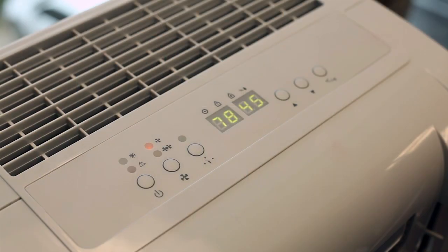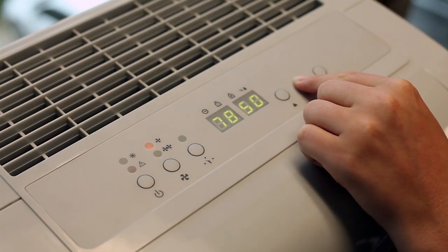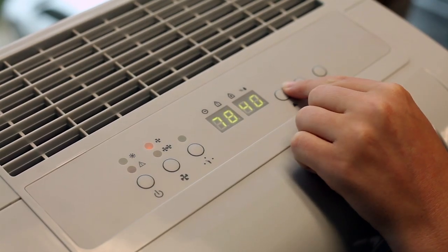The electronic humidistat can be set to maintain a 30 to 90% humidity level in increments of 5. The push-button controls can also be used to select a fan speed and program the 24-hour timer.